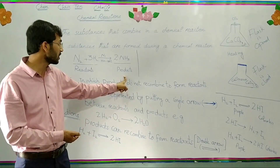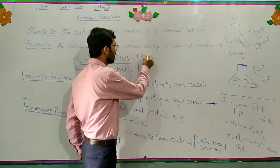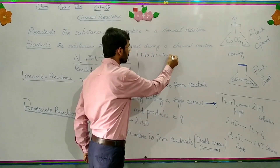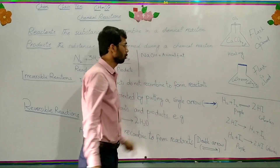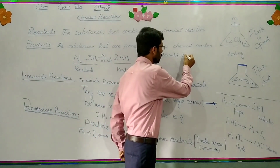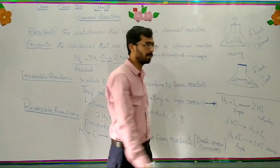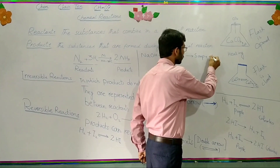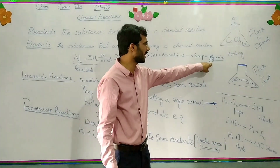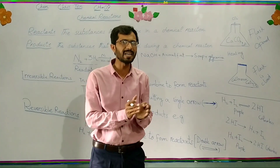There are some substances that are formed as a byproduct in some chemical reactions. For example, when sodium hydroxide and animal fat or vegetable oil are mixed together, they form soap. And as a byproduct, glycerine is produced. In the same way, in the process of photosynthesis, oxygen is produced as a byproduct.